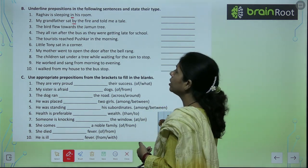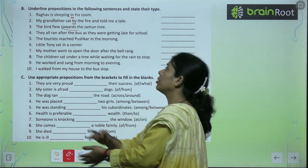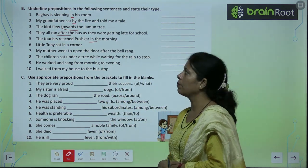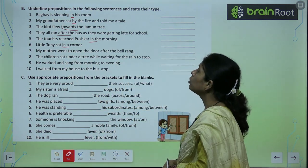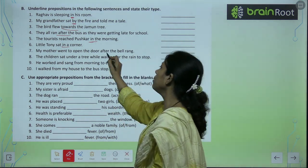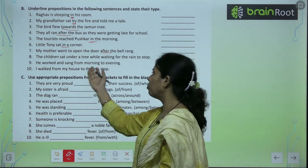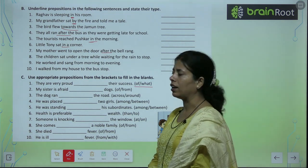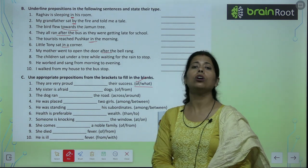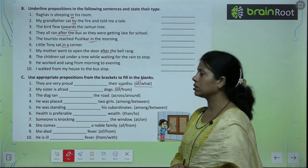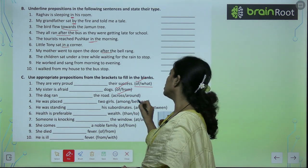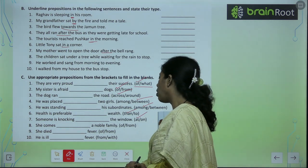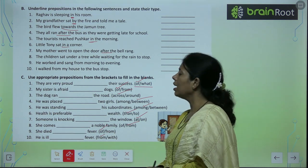Underline the preposition in the following sentences and state its type. 'The bird is towards the jamun tree' — preposition of movement. 'A bird is going to the jamun tree.' 'They all run after the bus — they were getting late for school.' 'Where are you running?' 'The tourist reached Pushkar in the morning' — preposition of time. 'A little Stony sat in the corner' — preposition of place. 'My mother went to open the door after the bell rang' — preposition of time. 'The children sat under a tree while waiting for the rain to stop' — preposition of place. Next, fill in the blanks with the correct option: 'They are very proud of their success.' 'My sister is afraid of dogs.' 'The dog ran across the road.' 'He was placed between two girls.' 'Someone is knocking at the window.' 'She comes from a noble family.' 'She died of fever.'